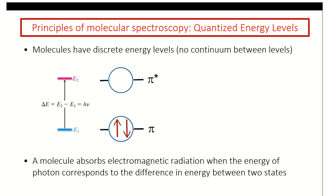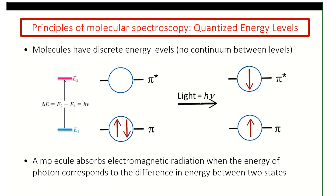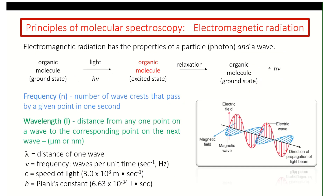If you imagine hitting this molecule with a particle of light, those two electrons in the ground state will be excited and you would have promotion of one electron to pi star. This promotion realizes absorption of hν. We associate this particle of light with a wavelength related to that light, because of Einstein's wave-particle duality.